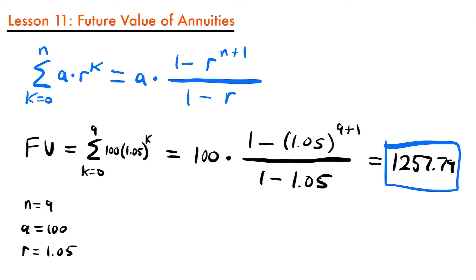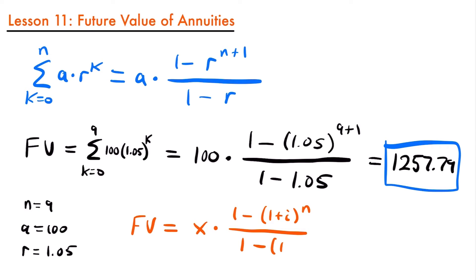We can actually generalize this to any future value situation dealing with an annuity. The future value of an annuity is going to be equal to whatever our payments are — x — multiplied by (1 minus (1 plus i) to the power of n) divided by (1 minus (1 plus i)), where n is your number of years or number of payments. We can observe that n plus one in the exponent applies in any scenario just like this one. So now we have a generalized form for the future value of an annuity, and we can make this even nicer.